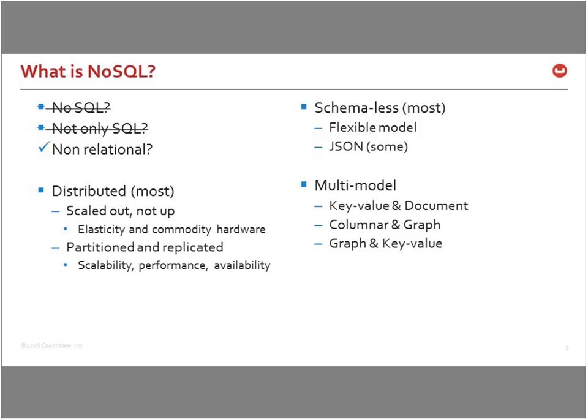NoSQL was also founded on a principle of either a schema-less or schema-flexible model, where you can essentially change how the data is stored or what kinds of data you're storing pretty much on the fly. Some NoSQL vendors, Couchbase included, store JSON — JavaScript Object Notation — documents as the fundamental way of storing data.